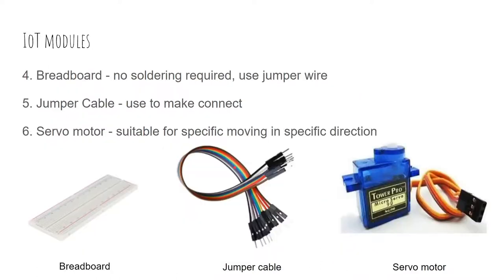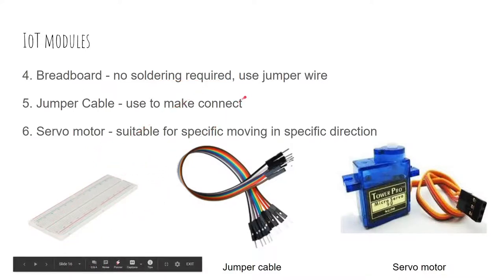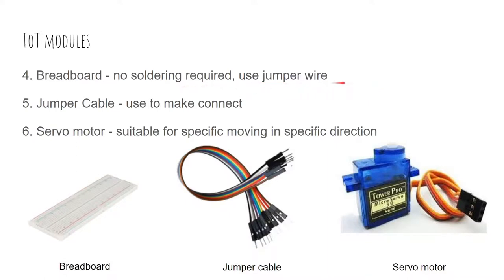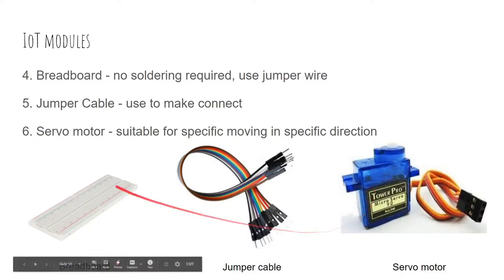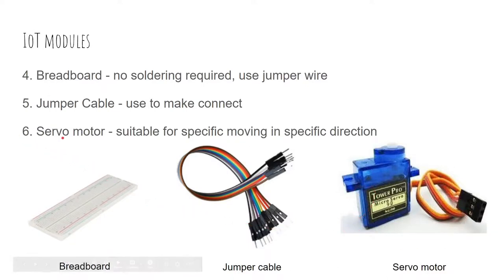For IoT module part two, the first is a breadboard — since no soldering is required for the prototype, breadboard is used with jumper cables to connect motors and the microcontroller together. The servo motor is suitable for specific movement in a specific direction; for the smart lock, the motor only needs to move in two directions to lock and unlock, making it a cost-effective and suitable choice.